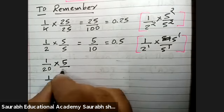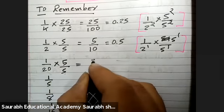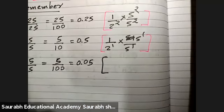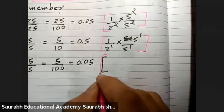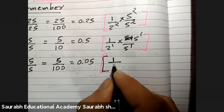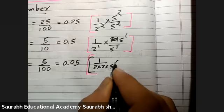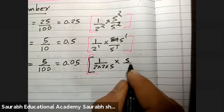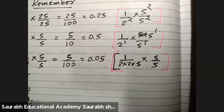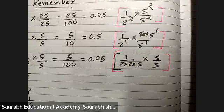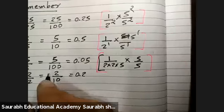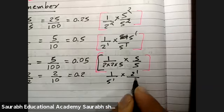Now, 1/20: I multiply with 5, it will be 5/100, which is 0.05. Understand: 1/20 means 2×2×5, so I already have 2 raised to 2 and 5. I will multiply by 5, giving 2 raised to 2 and 5 raised to 2 — same exponent of 2 and 5, and you will get the decimal. Similarly, 1/5: multiply by 2, getting 2/10 = 0.2.